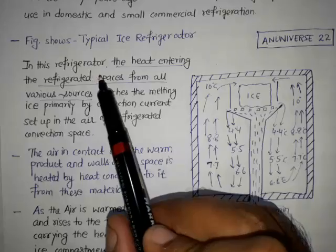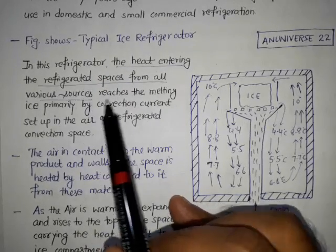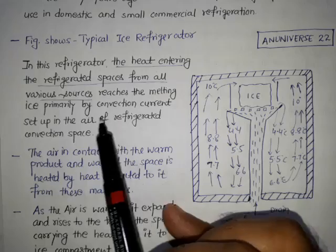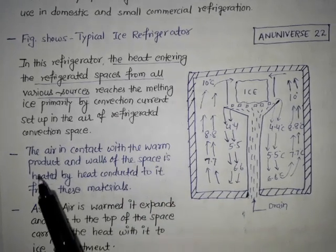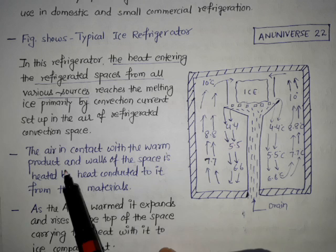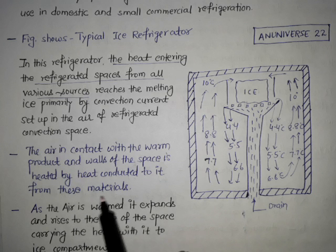In this refrigerator, the heat entering the refrigerated space from all the various sources reaches the melting ice primarily by convection current set up in the air of refrigerated convection space. The air in contact with the warm product and wall of the space is heated by heat conducted to it from these materials.